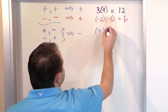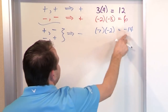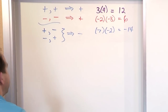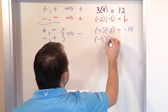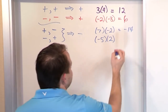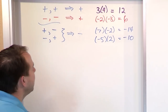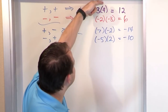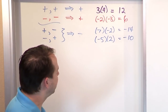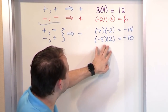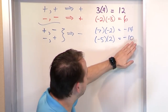For example, 7 times negative 2: since it's positive times negative, you get 14, but it's negative 14. Another example: negative 5 times positive 2 — the signs are different, so 5 times 2 is 10, but it'll be negative 10. The essential idea is if the two signs match, you always get positive answers; if they don't match, you always get negatives.